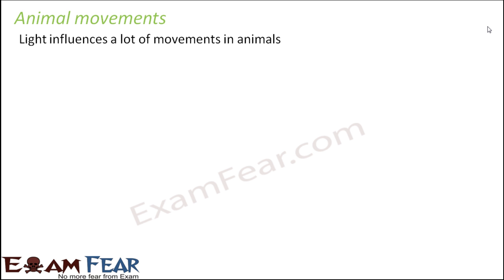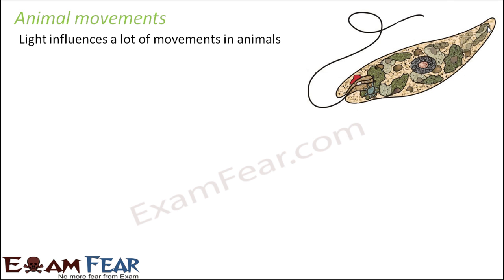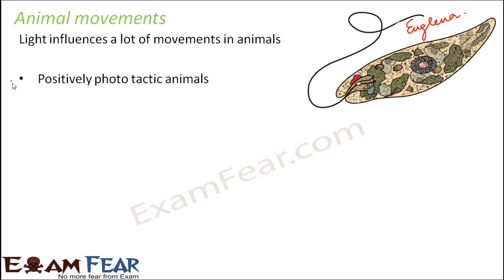The next impact of light on animals concerns their movements. A lot of movements in animals are directly impacted by light, especially in lower animals. For example, Euglena always moves towards the source of light — from wherever light is coming, it tends to move in that direction. These types of animals are known as positively phototactic animals. Positive because the animal is moving towards light — 'photo' means light and 'tactic' means attracted towards it.